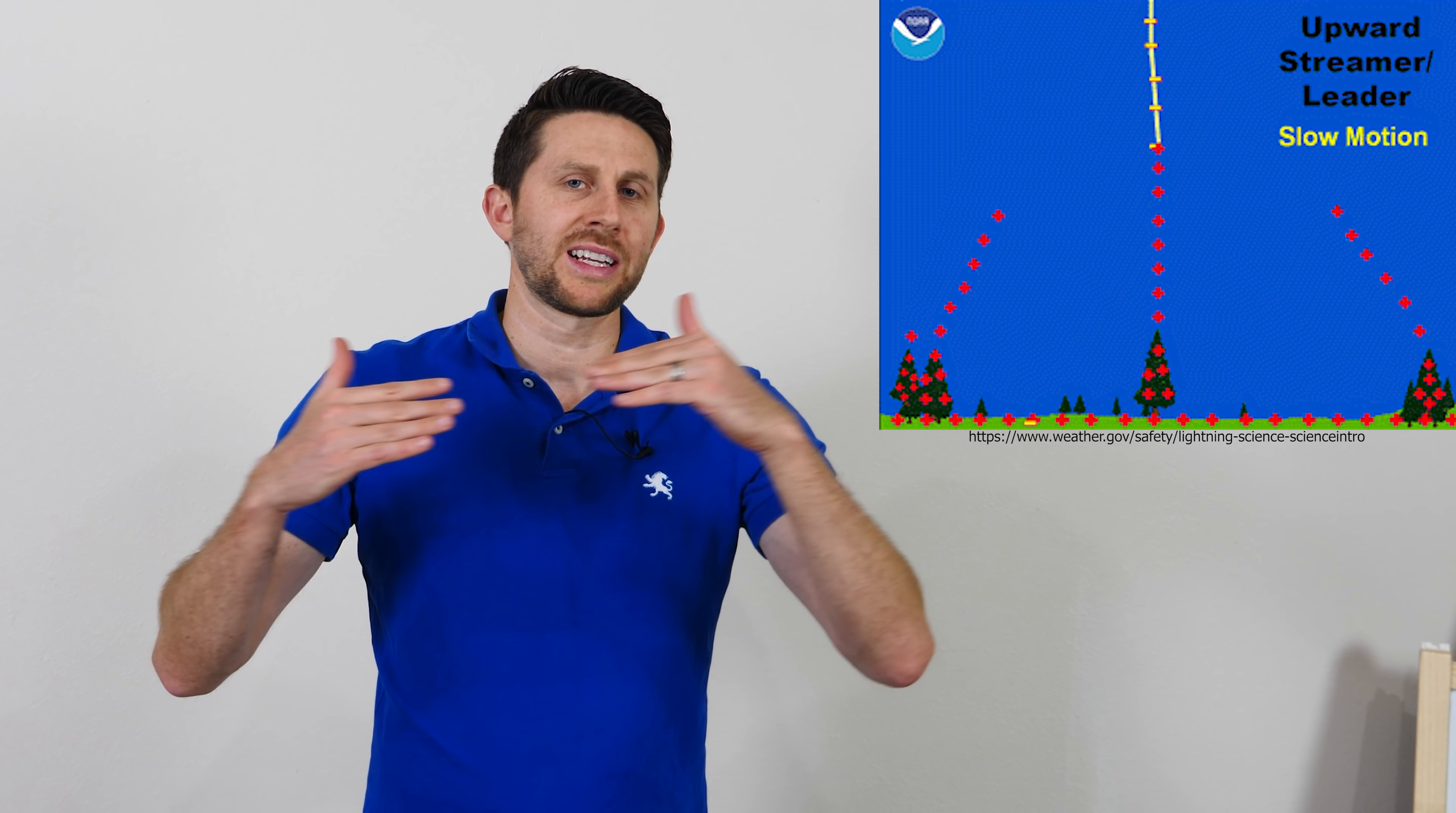What will happen is those positive charges will eventually start to branch up themselves. And once the stepped leader meets one of those positive branches coming up, that's when the main bolt of lightning can occur. Because now it has a conductive ion path all the way to the ground.